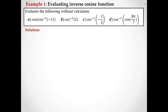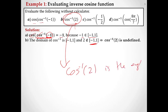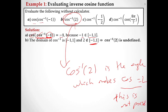Let's evaluate the following without a calculator. Cosine of cosine inverse of minus one equals minus one, because minus one is in the domain of cosine inverse — you can cancel them as long as the value is in the domain. When it comes to cosine inverse of two, it's undefined because two is not between minus one and one. Cosine inverse of two would be the angle which makes cosine equal to two, and this is not possible.